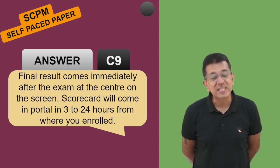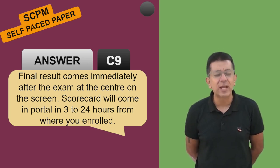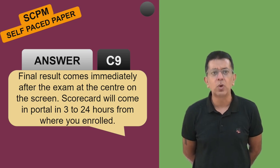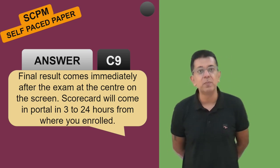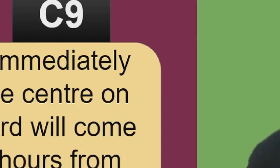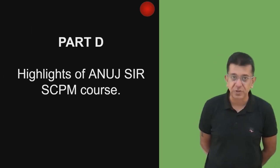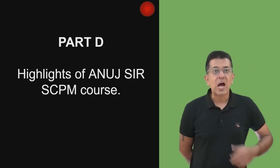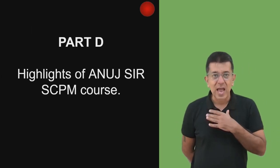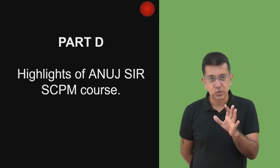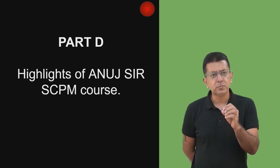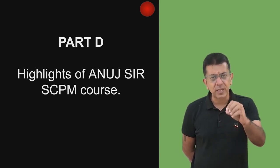Your exact scorecard - how much you have scored, say 75 out of 100 - will be coming between 3 to 24 hours in the portal where you had registered. Final result you immediately come to know whether you passed or failed. The exact scorecard honestly does not even matter, but it will be available between 3 to 24 hours.